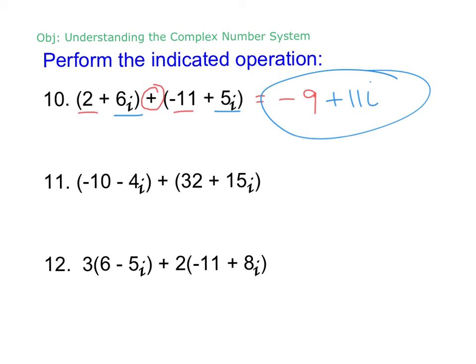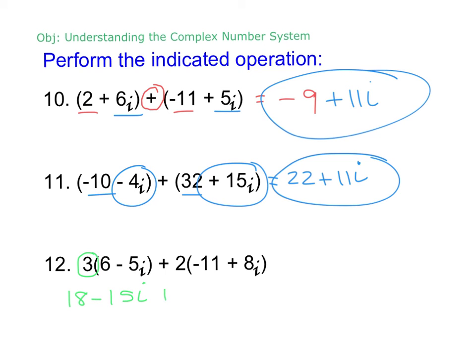Pause and do number 11. So that -10 and 32 gives us 22. And then we have our -4i and positive 15i plus 11i. Last one's a little harder, but not much. What do we have to do first? We're multiplying by a coefficient. So we're going to distribute. 18 - 15i, -22 + 16i. Now we can combine like terms. I've got 18 and -22 gives us -4. And then -15 and 16 gives me 1, so plus i. That's it. It's not anything crazy.